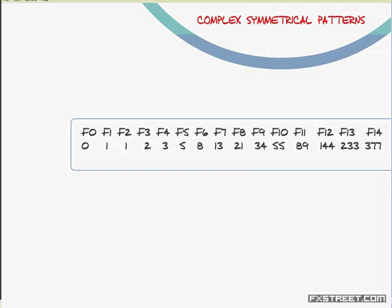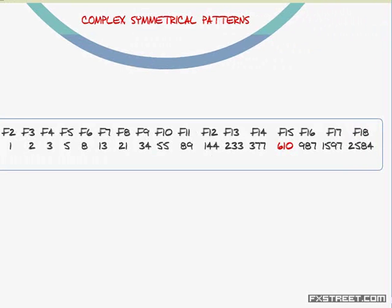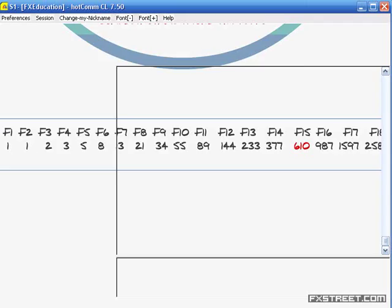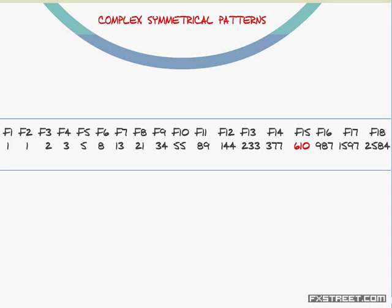If you take any number in the sequence, for example 610 divided by 144, that gives you 423.6 — that's a Fibonacci extension. And if you take 610 divided by 2584, it gives you 23.6. You're dividing your prime number by any number in the sequence to get these other stages.